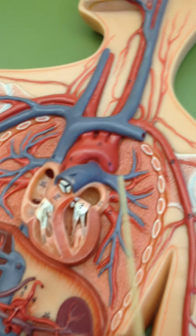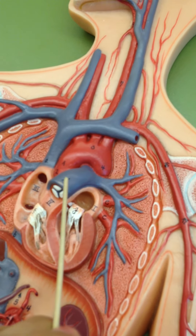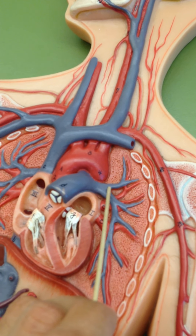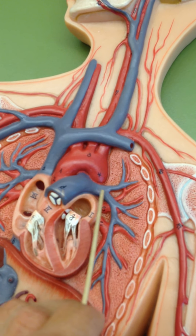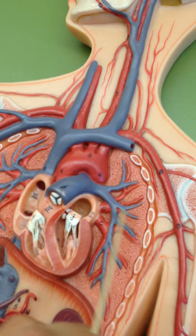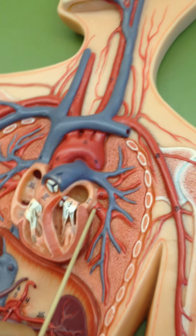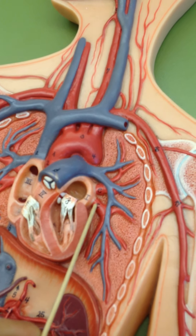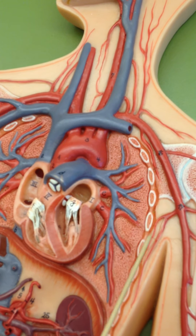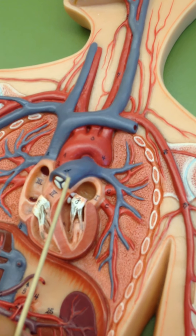Here you're going to have the pulmonary trunk, which will go on to branch out and become the pulmonary arteries. And then these are going to be the pulmonary veins — remember, this is one area where the colors are going to be switched.